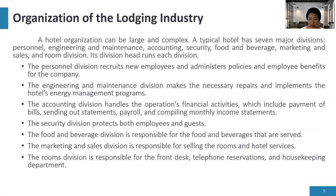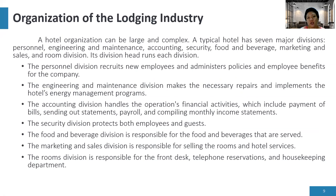The seven major divisions are: personnel, engineering and maintenance, accounting, security, food and beverage, marketing and sales, and rooms division. The organization of the hotel depends on its type of operation and the size of the hotel.